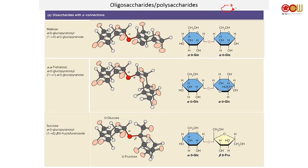This carbon will have one anomer that has OH pointing up, and the other one is going to point down. Remember that if it points down, this is alpha. If it points up, it's beta.